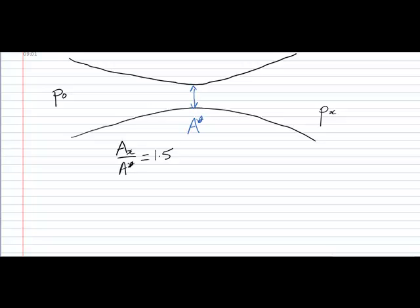and this allows us to compute what that non-dimensional mass flow rate would be at the exit simply by saying M dot root CP T0 over A at the exit P0